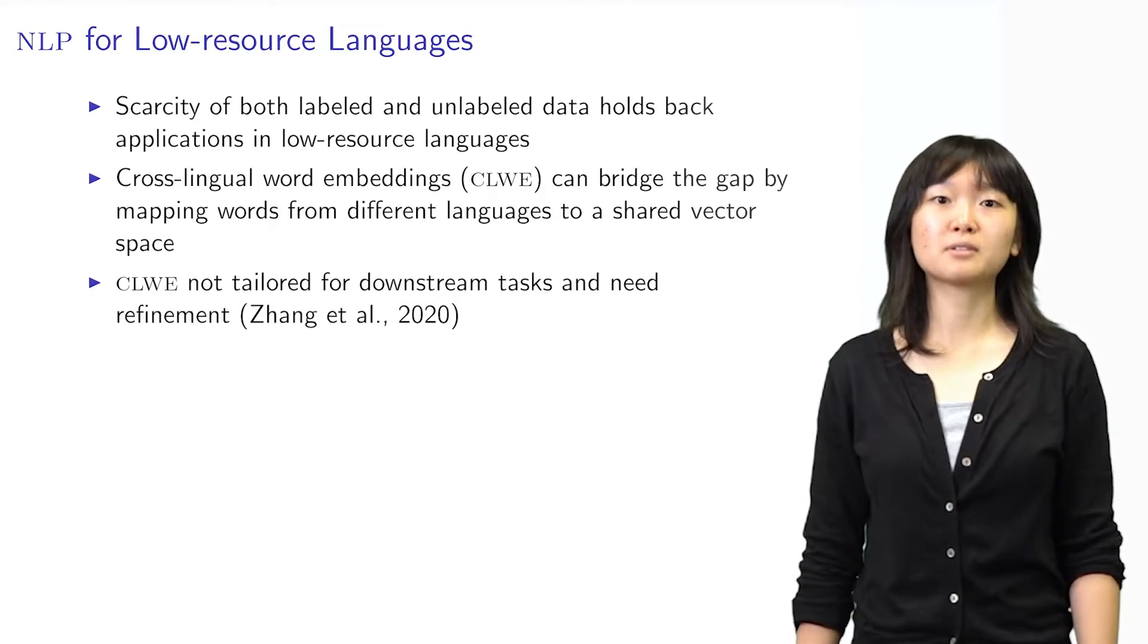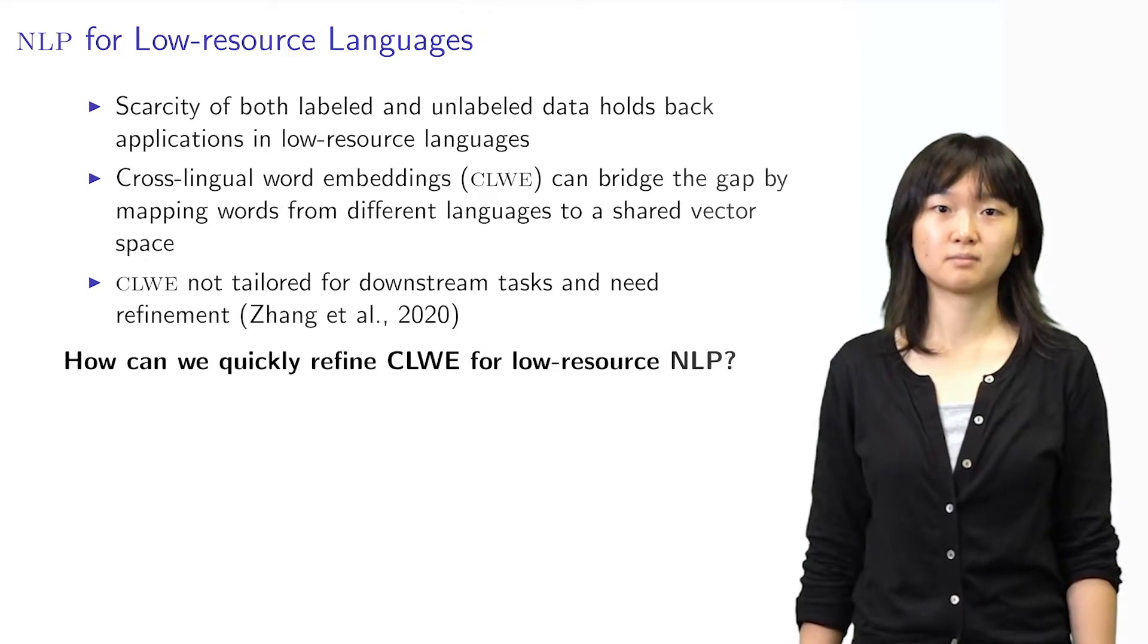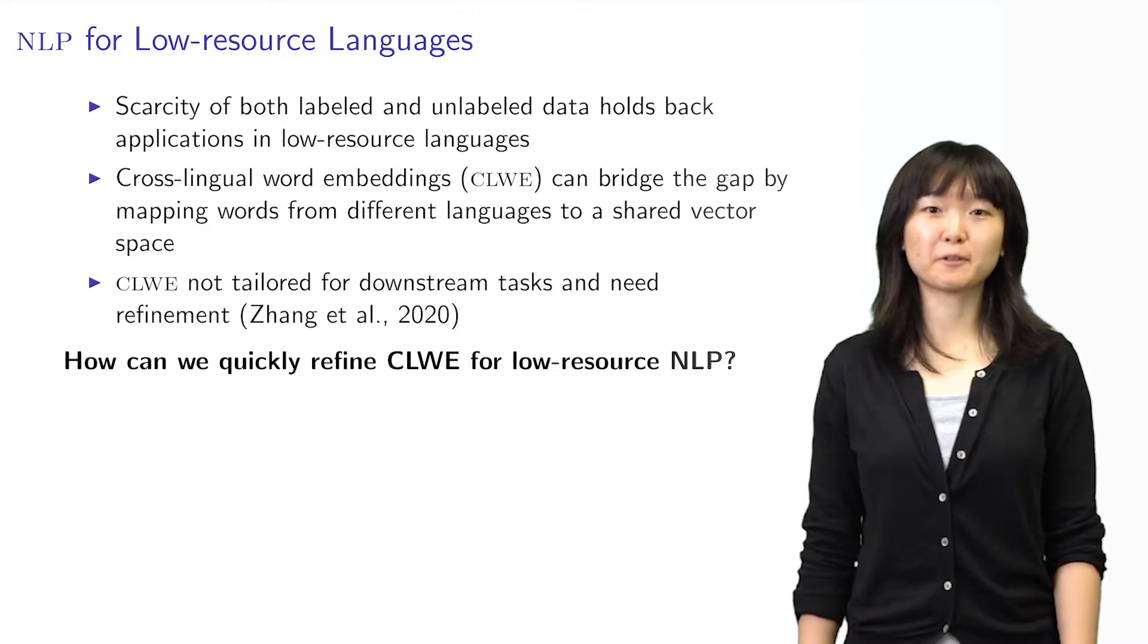Also, unlabeled data may be scarce or unreliable in low-resource languages, which leads to low-quality embeddings. So, how do we refine pre-trained embeddings for low-resource NLP?